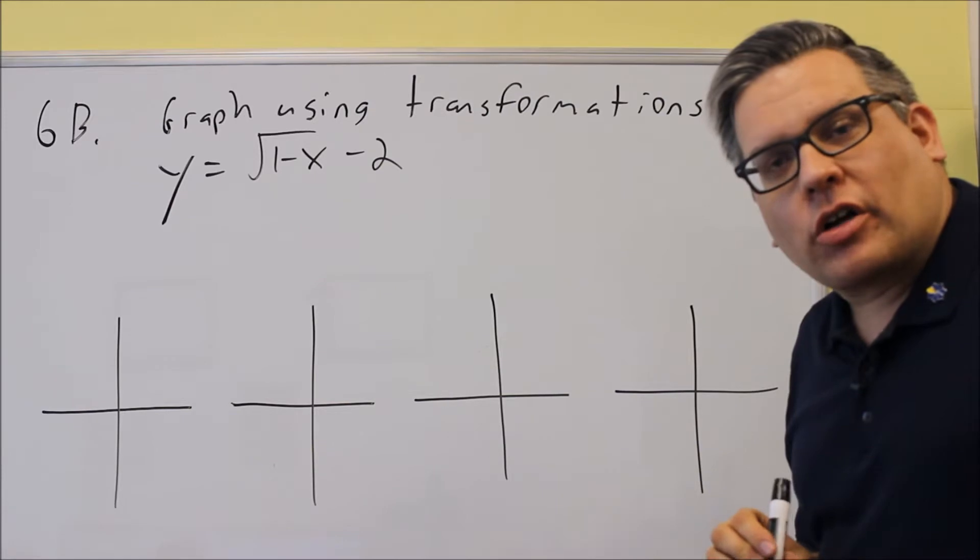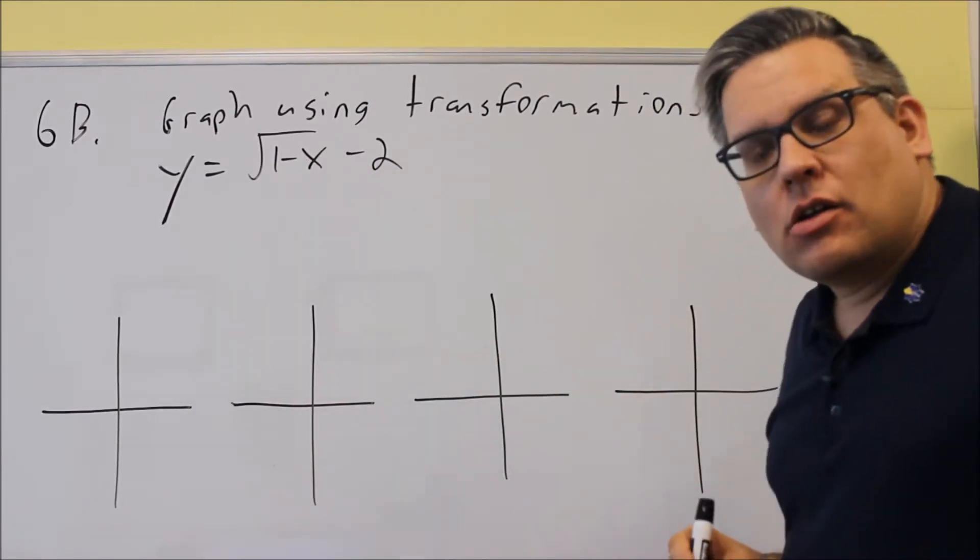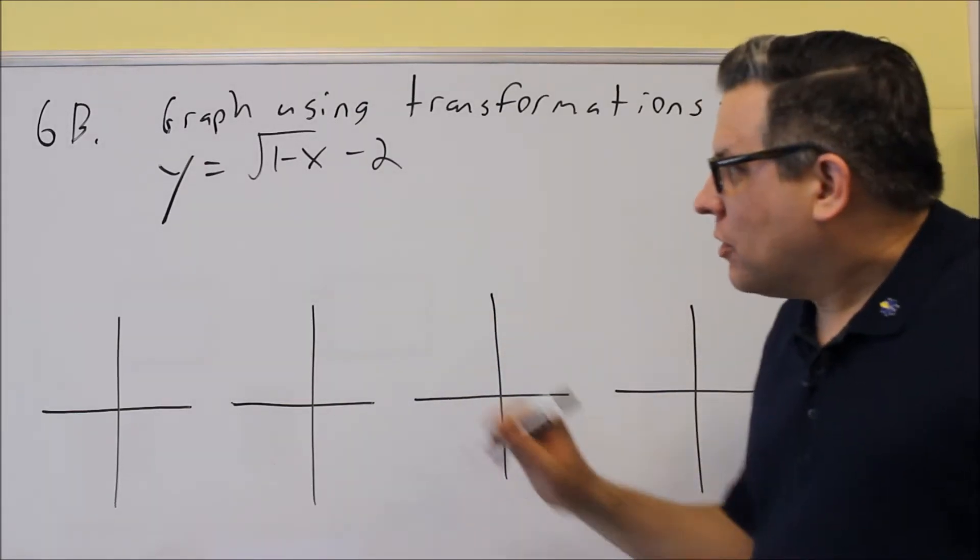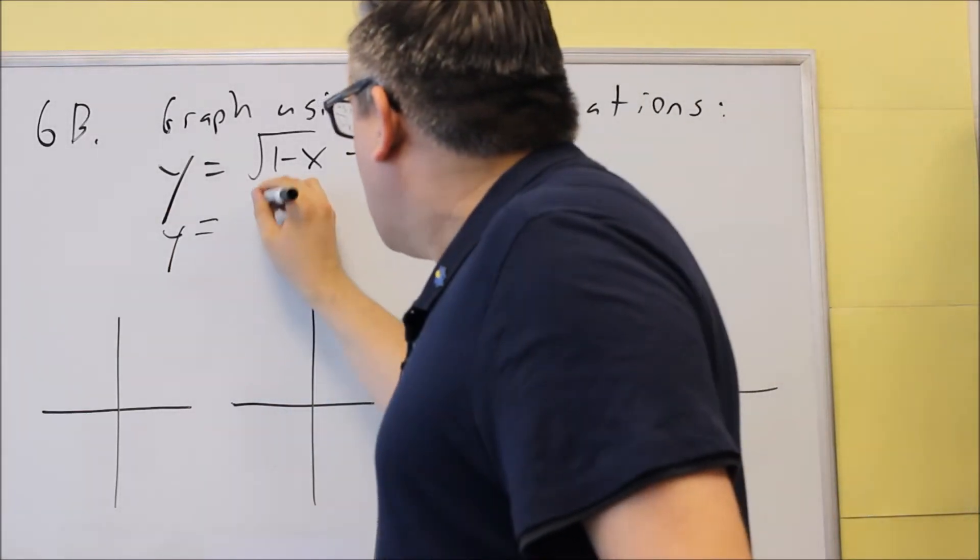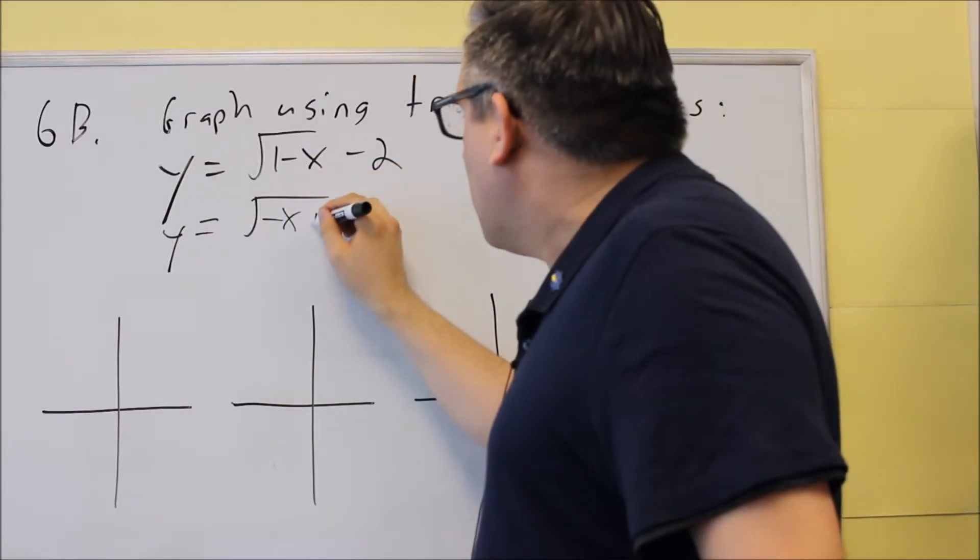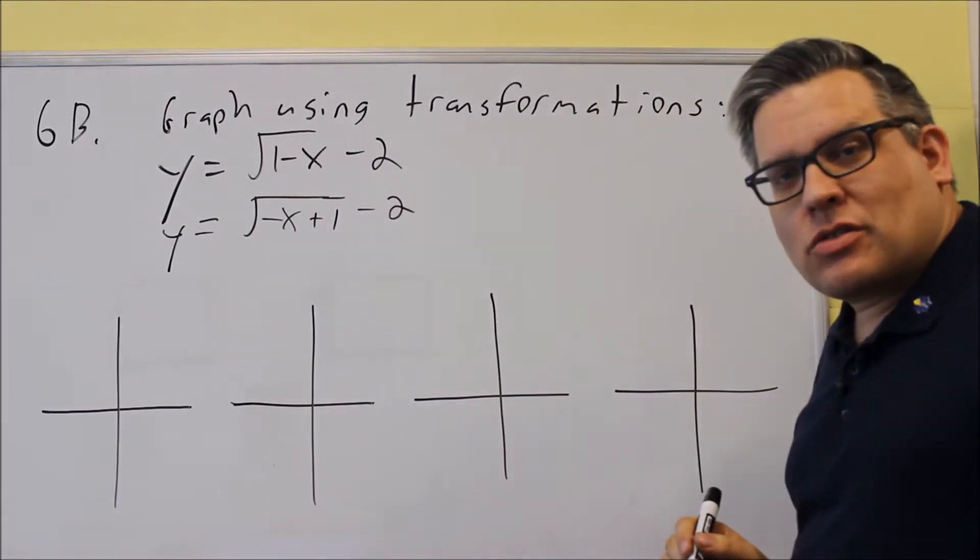For the transformations to work, the x value has to come first. In this case, it's not. So the first thing we want to do is actually rewrite this problem. We're going to rewrite the 1 and the x, so I'm going to flip the order around and write it like this.